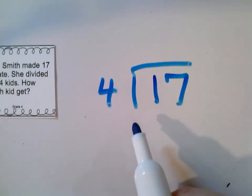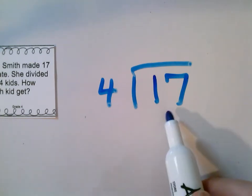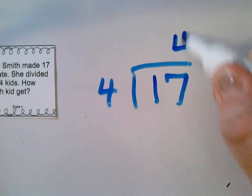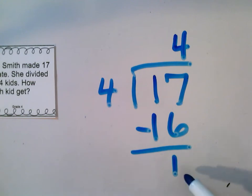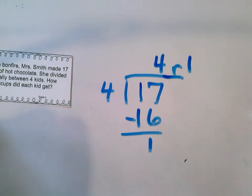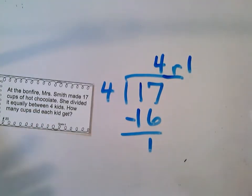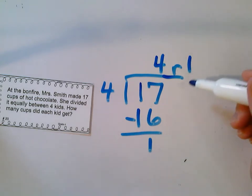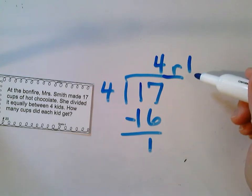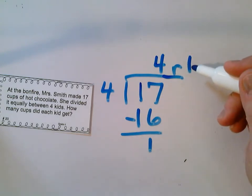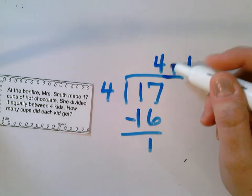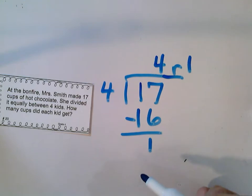I'm going to think about my 4's — 4 times 4 is 16, which gets me really close to 17. When I subtract, I find out I have 1 left over. This is my remainder, so I could say 4 remainder 1. But in the real world we don't say 'I had 4 remainder 1 cups of hot chocolate.' I need to figure out what I'm going to do with this leftover 1 cup. I have this 1 extra cup and I can actually share it among those 4 kids, so I'm going to write this out as a fraction.